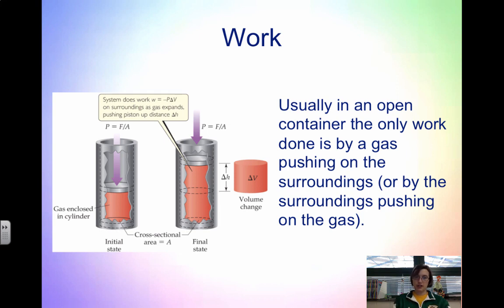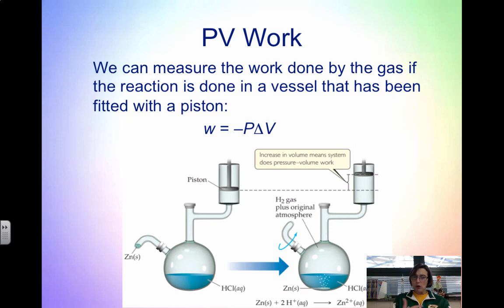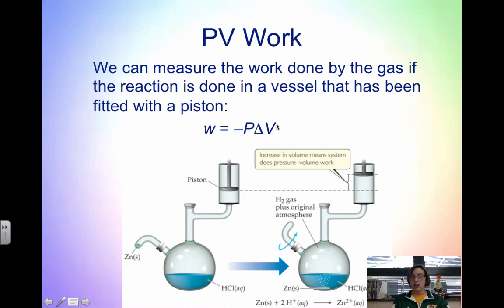The work we usually focus on in chemistry is related to gases and has to do with pressure and volume. When we look at a container, the work being done is either by the gas pushing on the surroundings or the surroundings pushing on the gas — work is done by expanding or compressing the gas. This is known as pressure-volume work, or PV work. We can measure the work done by the gas by focusing on pressure and the change in volume. This equation assumes pressure is constant.